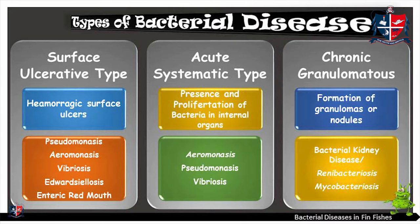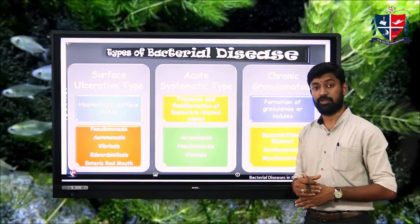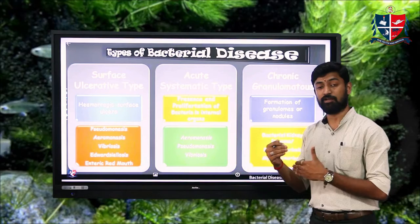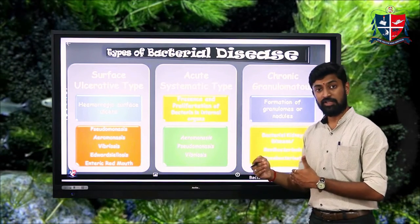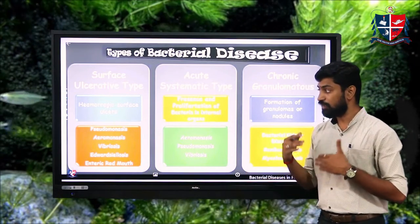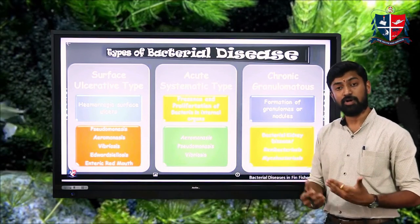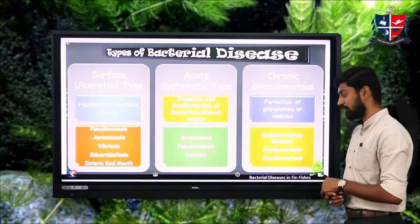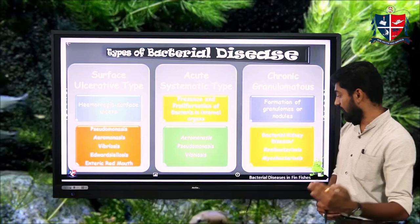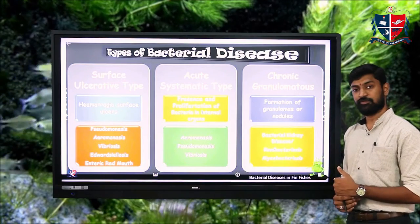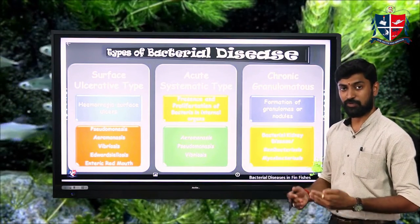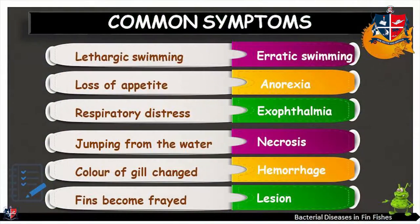Different types of diseases caused by gram negative and gram positive bacteria in fishes include aeromonasis, pseudomonasis, vibriosis, advaciliosis, enteric red mouth disease, bacterial kidney disease, runoff bacteriosis, and mycobacteriosis.